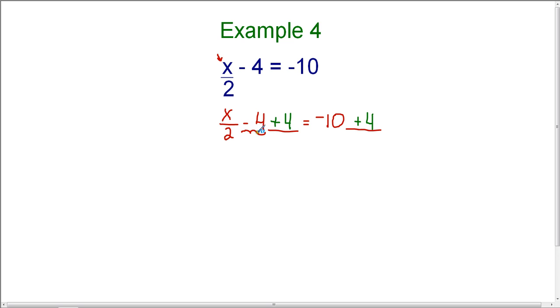We do this because negative 4 plus 4 is 0. That means that it's eliminated. So we're left with x divided by 2 on the left-hand side.